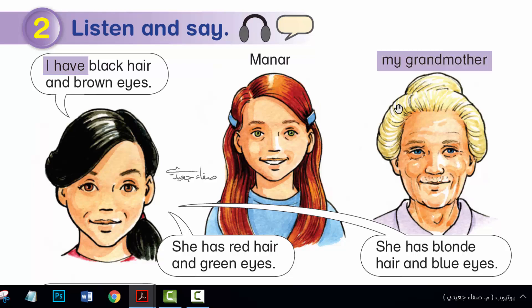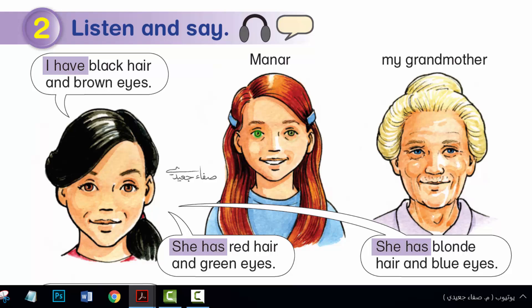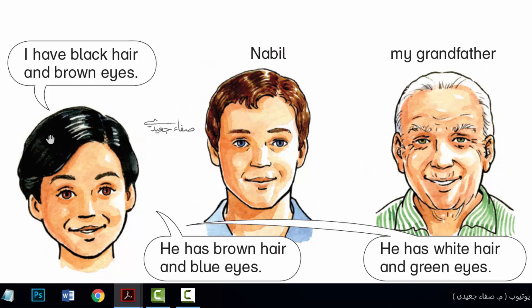This is my grandmother. She has blonde hair and blue eyes. This is my friend, Mana. She has red hair and green eyes. This is my cousin, Nabil. He has brown hair and blue eyes. This is my grandfather. He has white hair and green eyes.